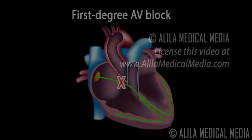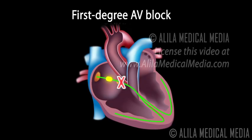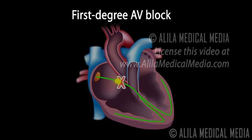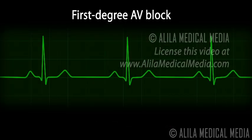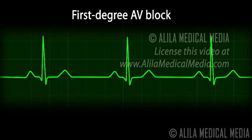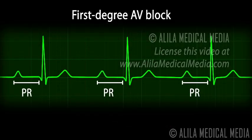There are three degrees of AV block. In first degree AV block, the electrical signals are slowed as they pass from the SA node to the AV node, but all of them eventually reach the ventricle. On an ECG, this is characterized by a longer PR interval of more than five small squares.